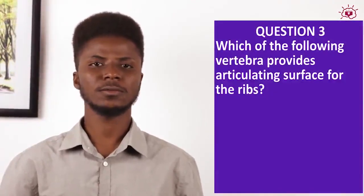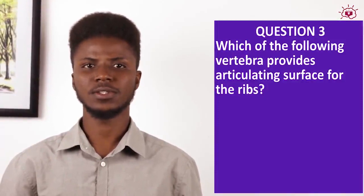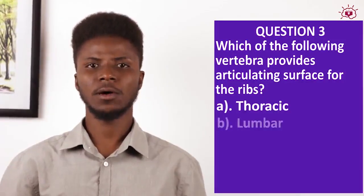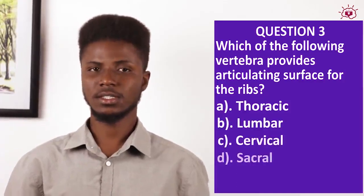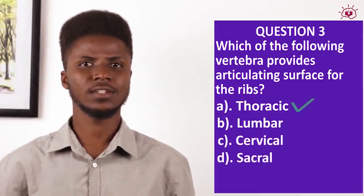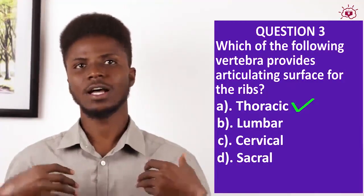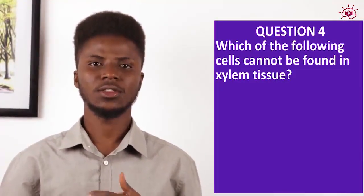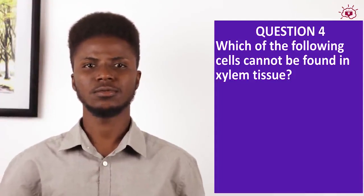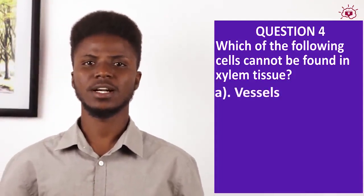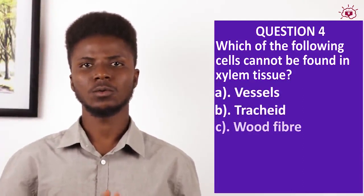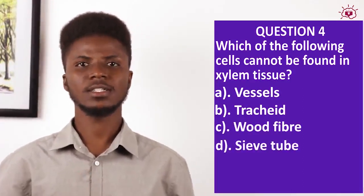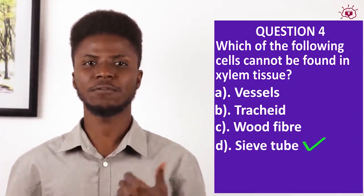Question 3: Which of the following vertebrae provides the articulating surface for the ribs? a) thoracic, b) lumbar, c) cervical, d) sacral. Answer: thoracic vertebra — the ribs are joined to the thoracic vertebra, which is the vertebral column of the chest region. Question 4: Which of the following cells cannot be found in xylem tissue? a) vessels, b) tracheids, c) wood fiber, d) sieve tubes. Answer: sieve tubes, which are found in the phloem tissue.